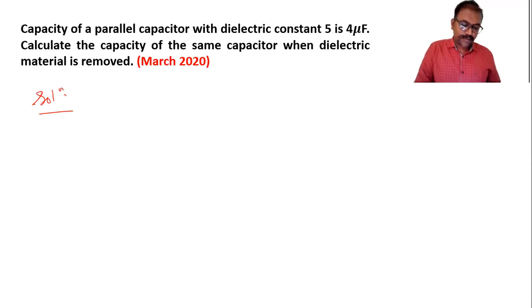So here for the dielectric constant, I will use K for dielectric constant which is 5. So the capacity is 4 microfarad and we have to find out the capacity when dielectric material is removed, means the capacity with air.